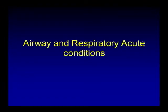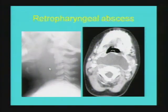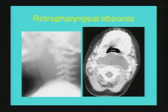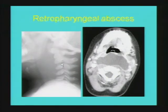Moving forward to acute airway and respiratory conditions — some of these cases were already covered in a prior lecture. This is a classical example of retropharyngeal abscess with exuberant prevertebral soft tissue forming a convex anterior margin. Note the alignment of the cervical vertebral bodies: not only is there loss of normal cervical lordosis, but there is actual reversal of the cervical spinal curvature, a helpful sign to differentiate redundant from inflammatory retropharyngeal soft tissue.